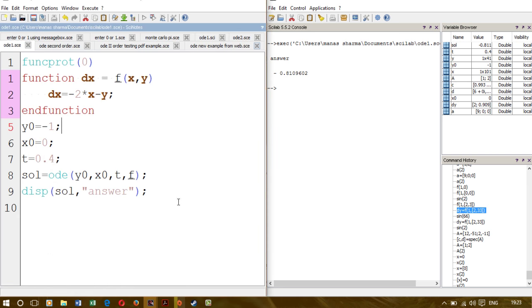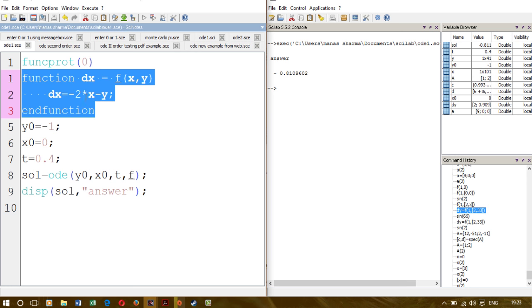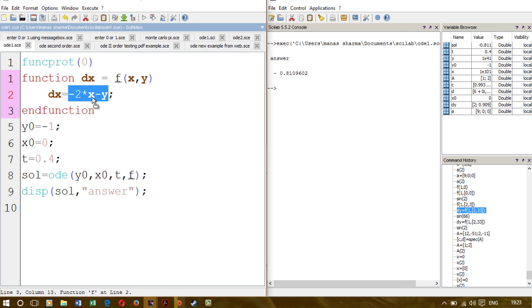I hope you understood how to solve a differential equation in Scilab. It's pretty easy: you define a function f and enter the differential equation, then you give the initial values and the value at which you need to find out the answer, and then you call this function ODE and pass the initial values as well as the function.